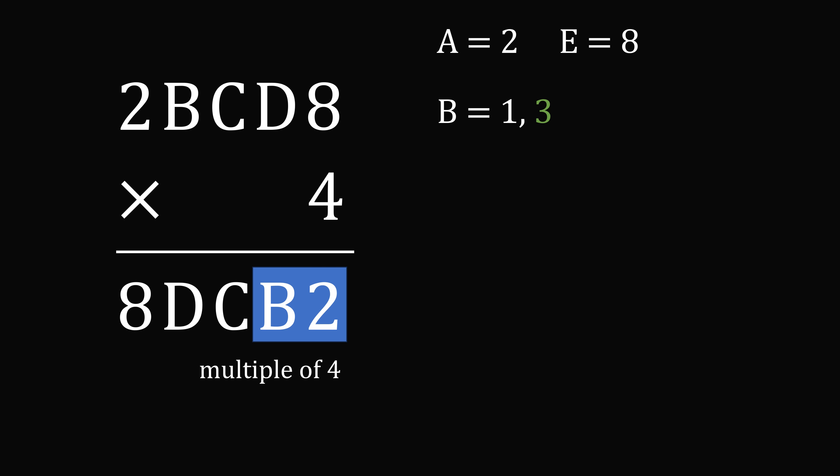But what would happen if B were equal to 3? We would have 23,000 about multiplied by 4 and that's equal to 92,000. But 92,000 is too large of a number because we already know that E is equal to 8 and we need the result to be something in the 80,000s. So that means we can't have B is equal to 3. We must have B is equal to 1. So we're making very good progress here.